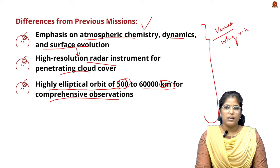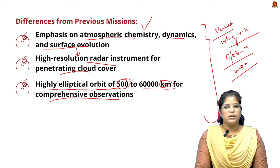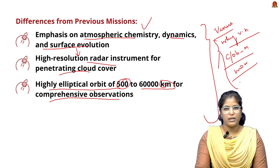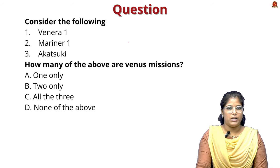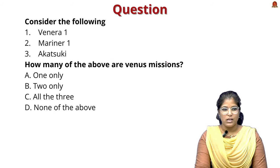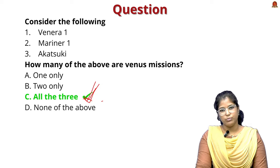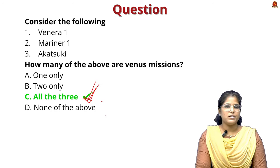The mission uses a highly elliptical orbit of 500 to 60,000 km for comprehensive atmospheric observation. The practice question lists Venera 1, Mariner 1, and Akatsuki and asks how many are Venus missions. The correct answer is option C — all three are missions to Venus.